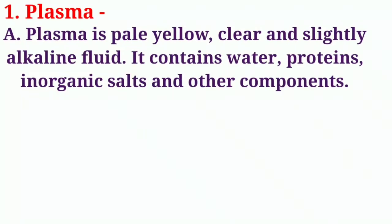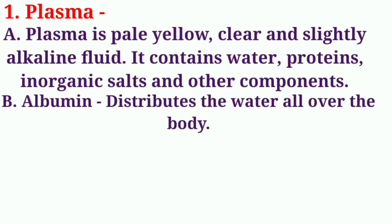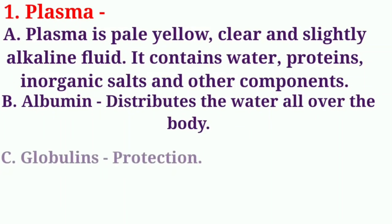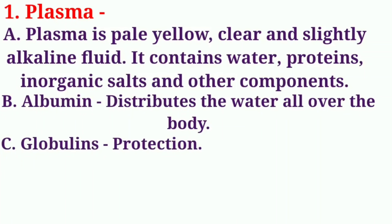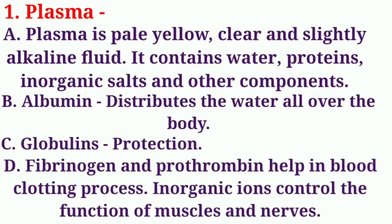Plasma is a pale yellow, clear, slightly alkaline fluid. It contains water, proteins, inorganic salts, and other components. Albumin distributes water all over the body; globulins provide protection; fibrinogen and prothrombin help in the blood clotting process. Inorganic ions control the function of muscles and nerves.